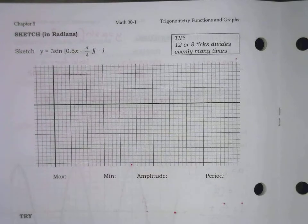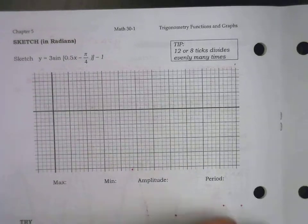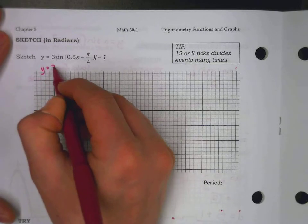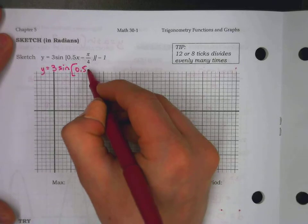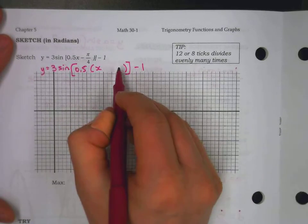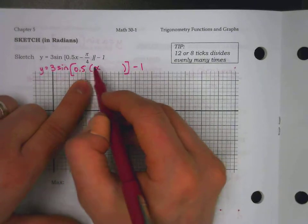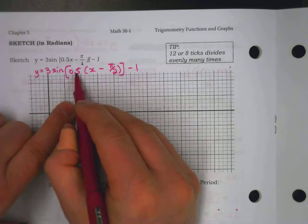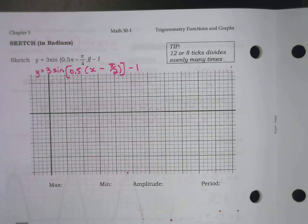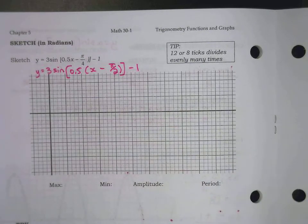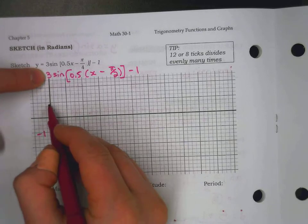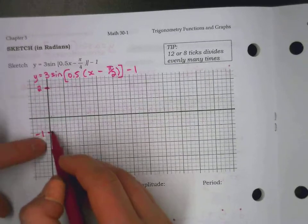We have a couple more graphs to attempt. As a sketch in radians for the first time, we have to make sure we're dealing with a nice scale and dealing with factored form. We have to factor out that B value to give us our proper C to see our proper shift. So 0.5 times what makes a quarter? A half of what makes a quarter? A half of a half — so a half of pi over 2 is pi over 4. I didn't give a scale this time because sometimes we need to come up with that scale. We're dealing with a shift down 1 and an amplitude of 3.